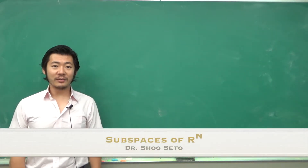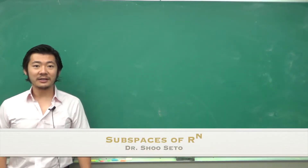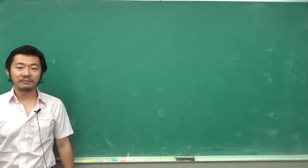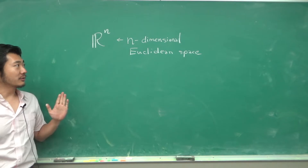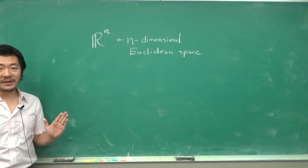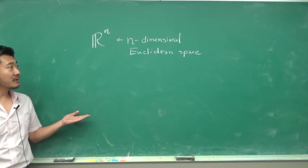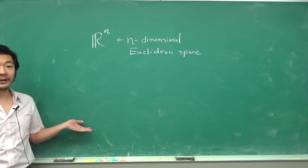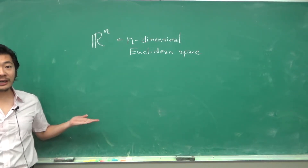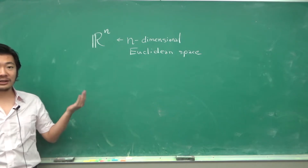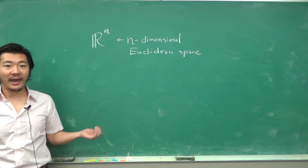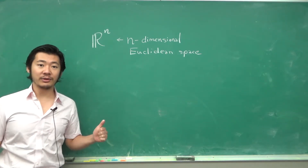In this video we will talk about subspaces of Rn. Rn is what's called the n-dimensional Euclidean space, but more simply it's just a collection of points described by n real numbers.